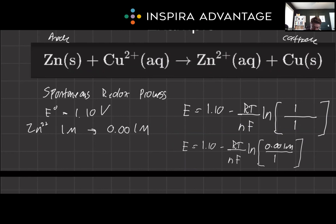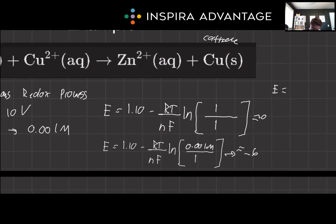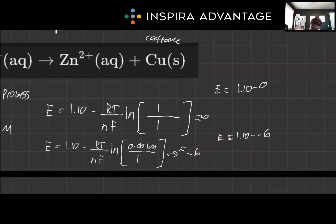And a property of the natural log here is that this number is going to be something negative. I think in this case it's about negative 6. Whereas the natural log of 1 over 1, that's just going to give us 0. So then we can say E equals 1.10 minus 0, or E equals 1.10 minus negative 6. So the top one will be 1.10. The bottom one will be 7.1.